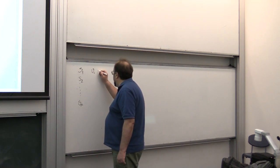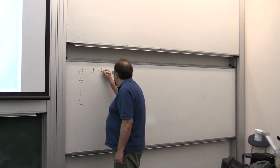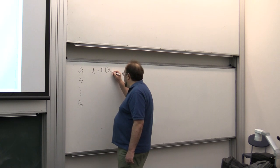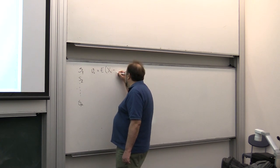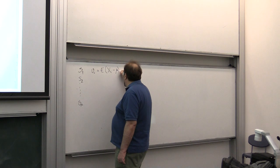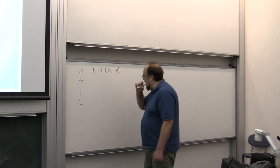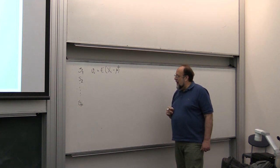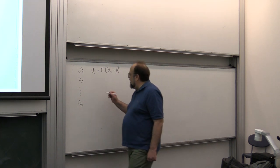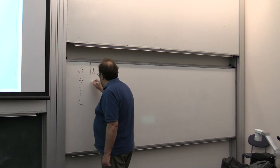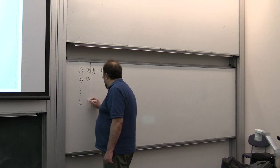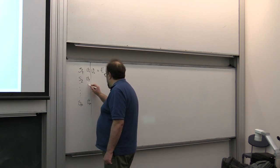The variance of sensor I is the expected value of the measurement by sensor I minus the true value, squared. So you have variances V1, V2, all the way to Vn.